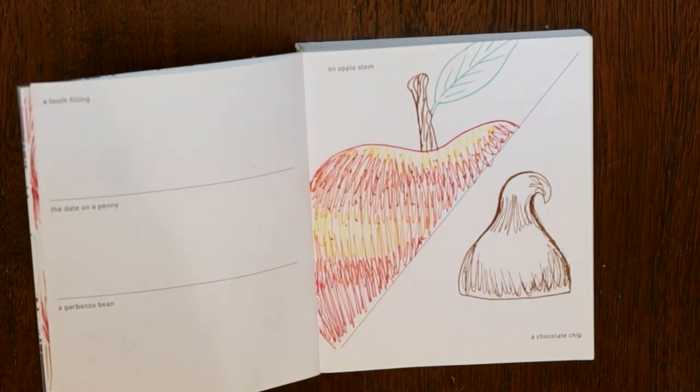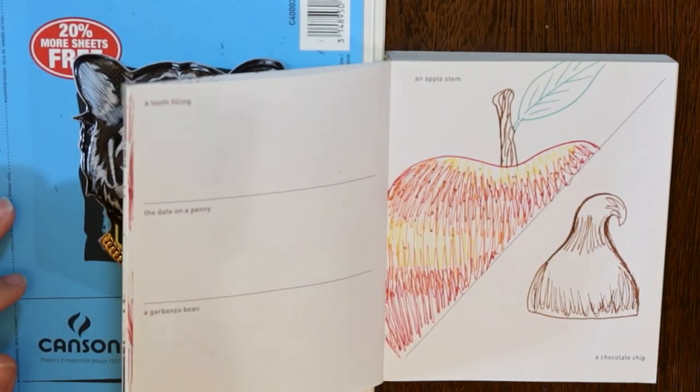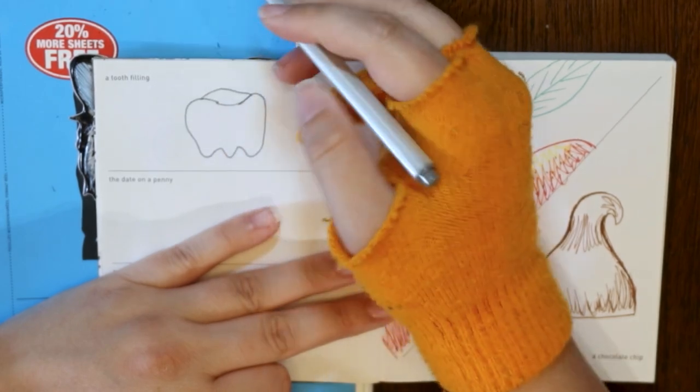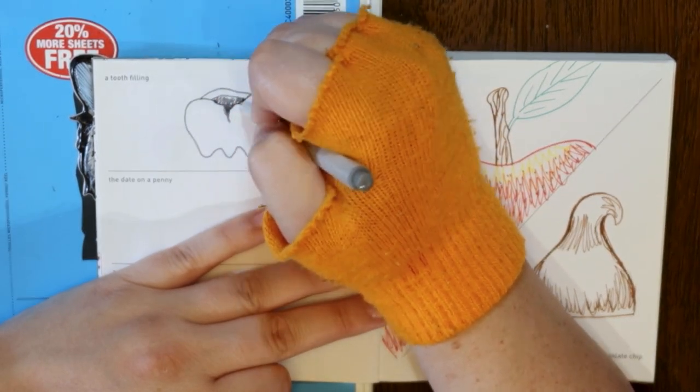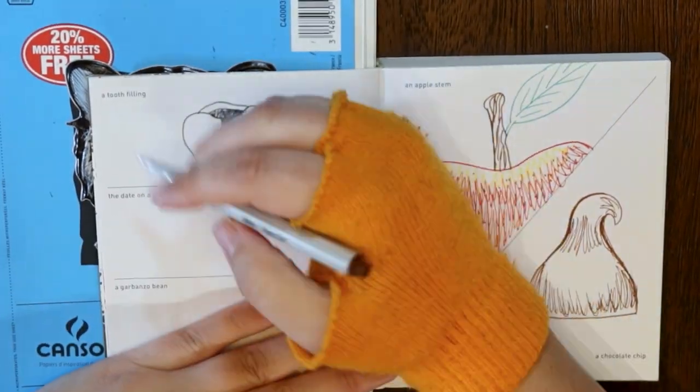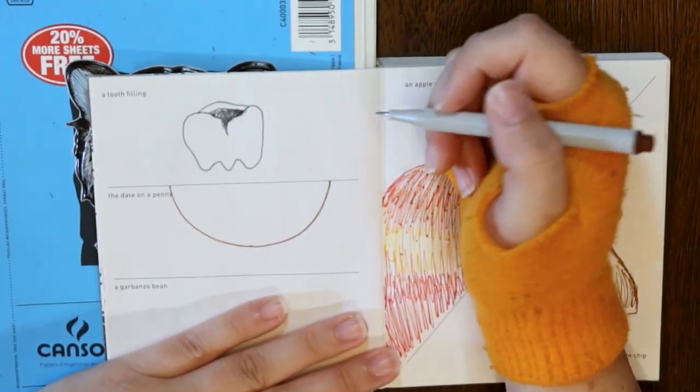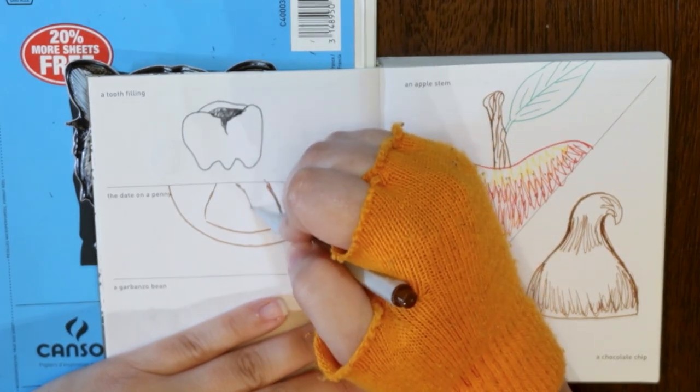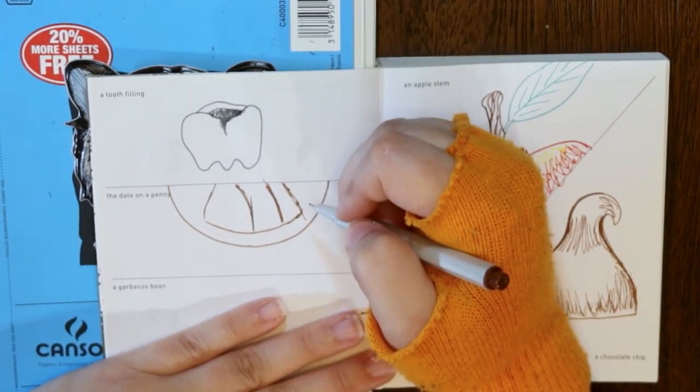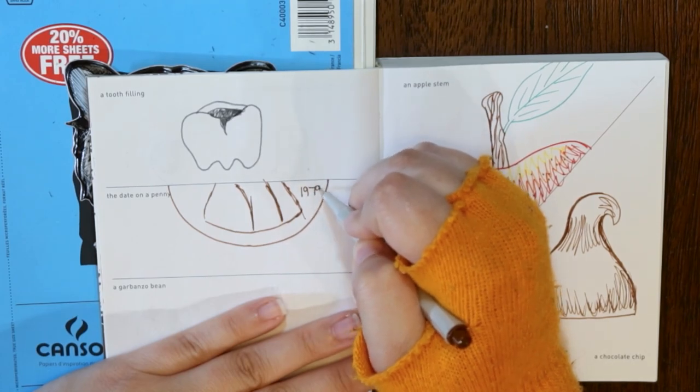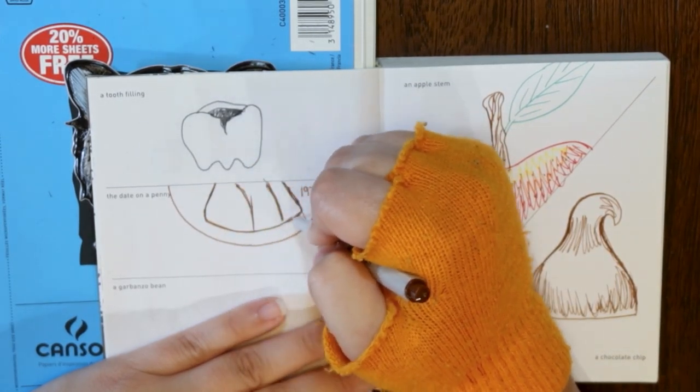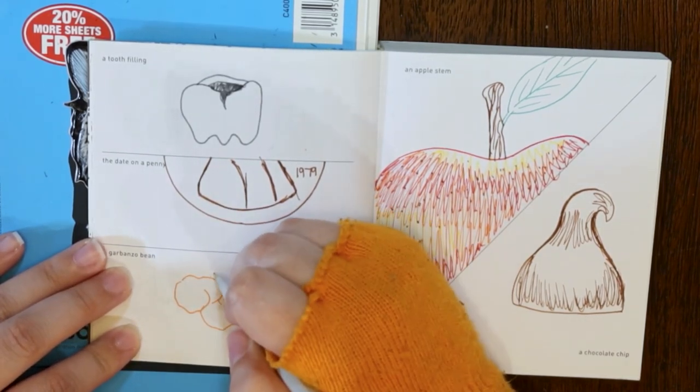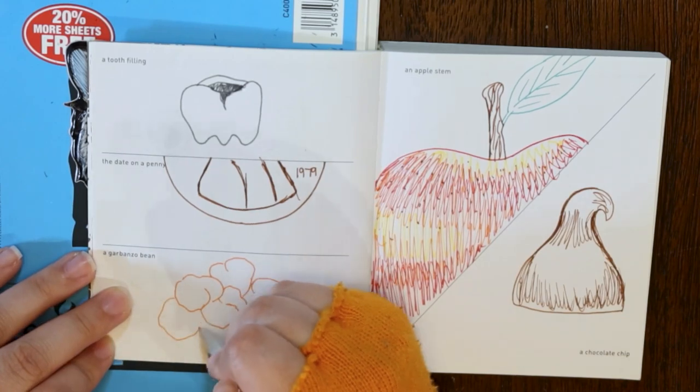And here comes the sketchbook back. And a tooth filling. I think mine ended up looking more like a cavity than a filling, but whatever. I was working with what I had. And a date on a penny. I literally just googled a penny and copied the date that I saw, because I didn't know what else to do here. Like I said, I feel like there's not really that many options for these prompts. And then a garbanzo bean. I've never had one of those, like the onion pearls, so I had to look that up. I'm just checking out the other prompts here.